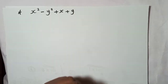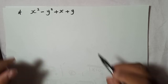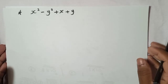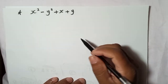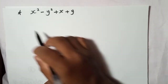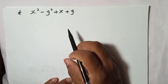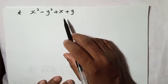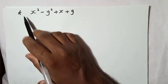Now let's focus on how to factorize this question — this one is a little bit different. When I explain other questions, I told you that when factorizing, you have to first find if there is any common thing. Now here, we have no common thing for all four terms.